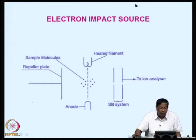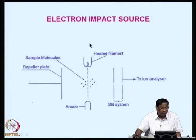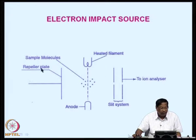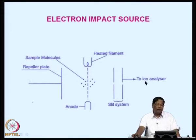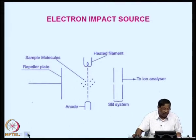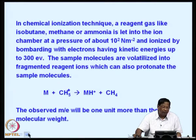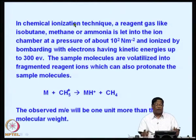In the electron impact source, a heated filament is present with an anode. Sample molecules are introduced, the electrons bombard the molecules, and through a repeller plate and slit system, the molecular ions travel toward the ion analyzer. This is a schematic diagram for the production of ions.